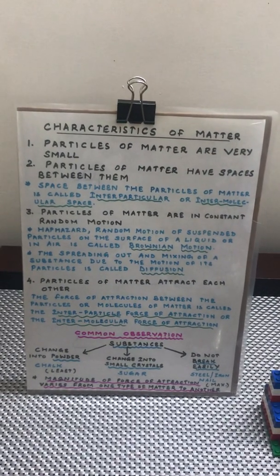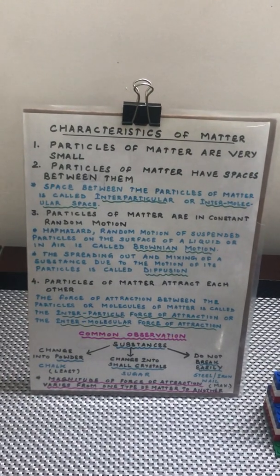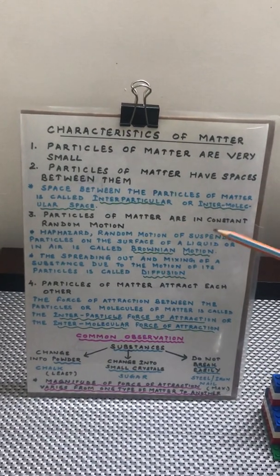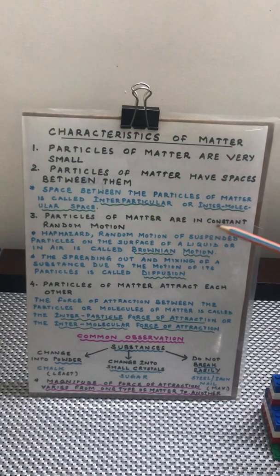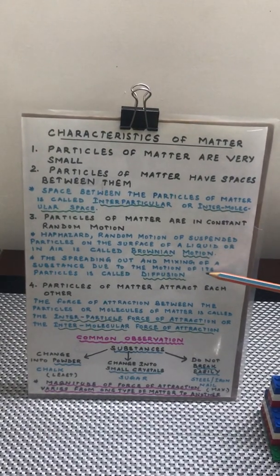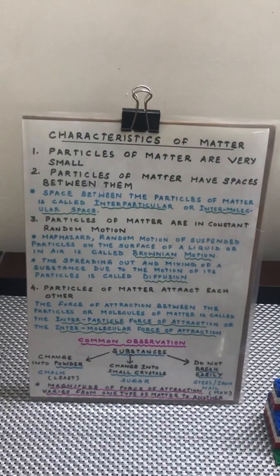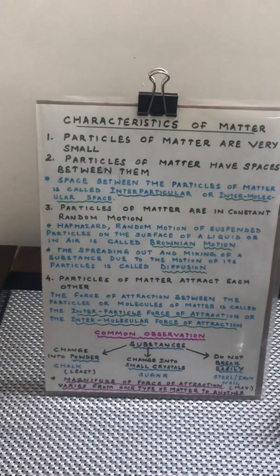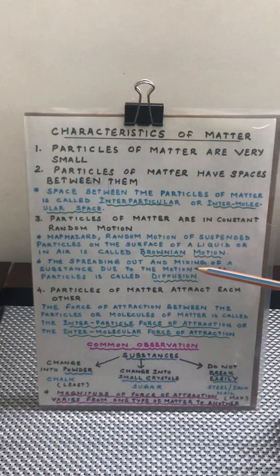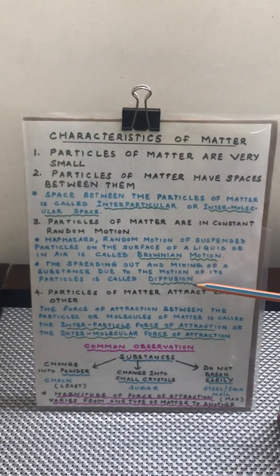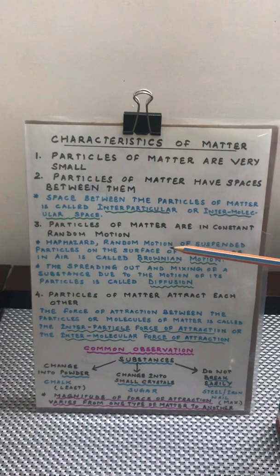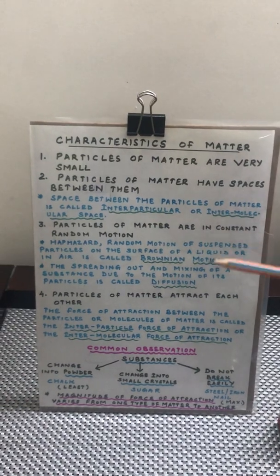How do we come to know that particles of matter are in constant motion? There are two very important phenomena known as Brownian motion and diffusion.